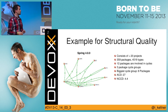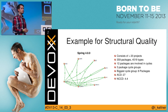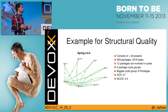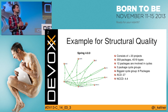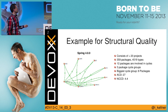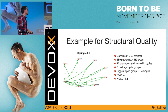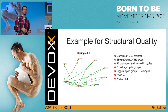Here's an example of structural quality. I picked Spring because they're famous for the dependency inversion principle, so their coupling should be low. They have around 20 projects built modularly on top of each other so you don't have to use the whole thing. There's only a package cycle group of eight packages — the biggest one — with 12 packages total involved in cycles. The average component dependency has a value of 27, which is pretty low for such a big system.